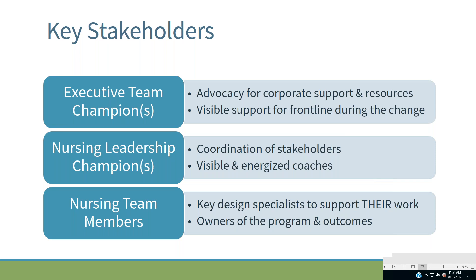Let's start with the executive team champions. The executive team has to advocate for support and resources. At least one of you in the chat indicated that accountability for support and resources from leadership was really important, and I think it is. The other thing is visible support — we all have to buy in that this is going to take extra work time, education time for staff to learn how to do it well, and possibly monitoring and data reporting. All of those things are part of the budget and productive hours, so they have to support that. This is also a critical time for them to be visible.